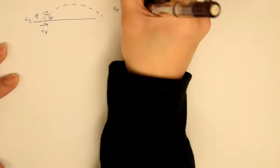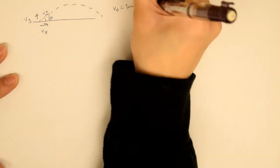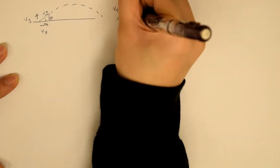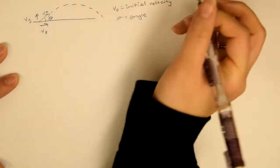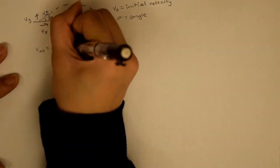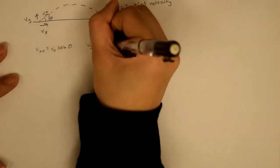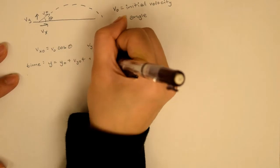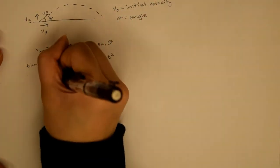A projectile motion is when the ball is launched, and this can be broken up into two components: your horizontal velocity and your vertical velocity, and this is taken from your initial velocity and angle. Taking your trig functions, you can plug them into your kinematics equations to find your ideal angle.